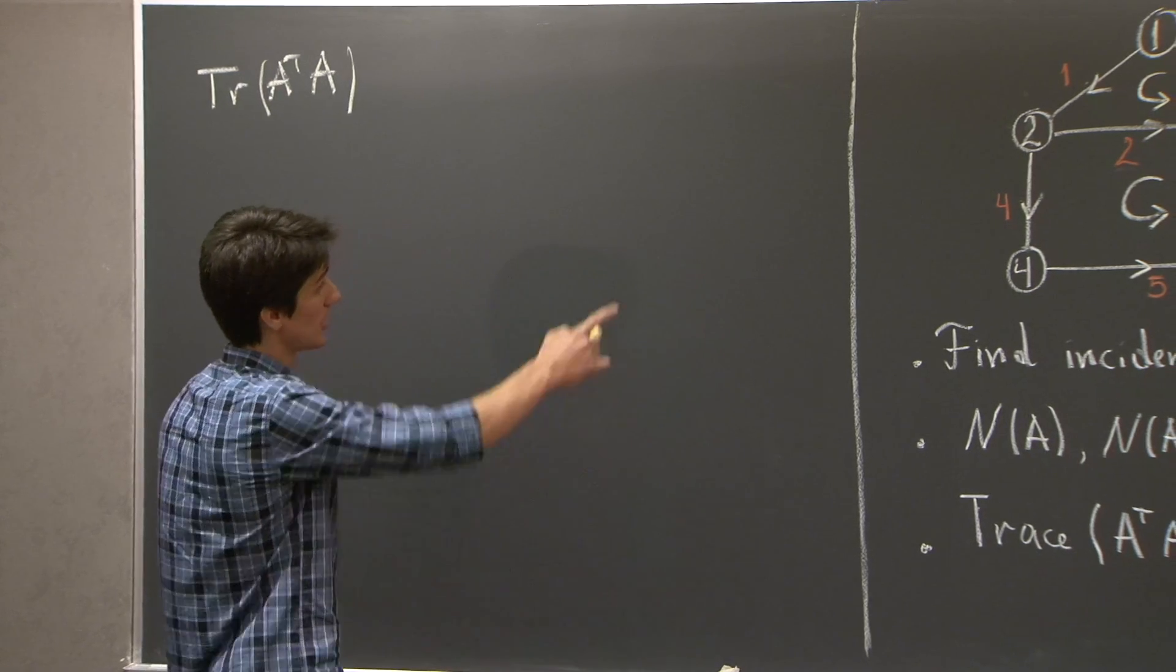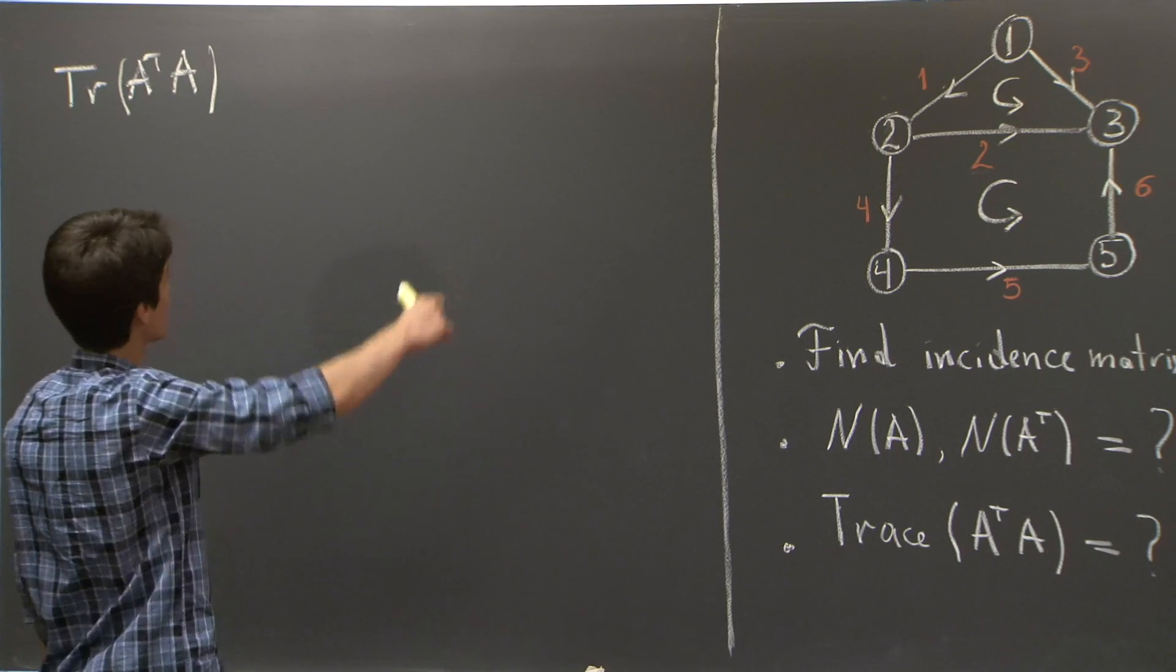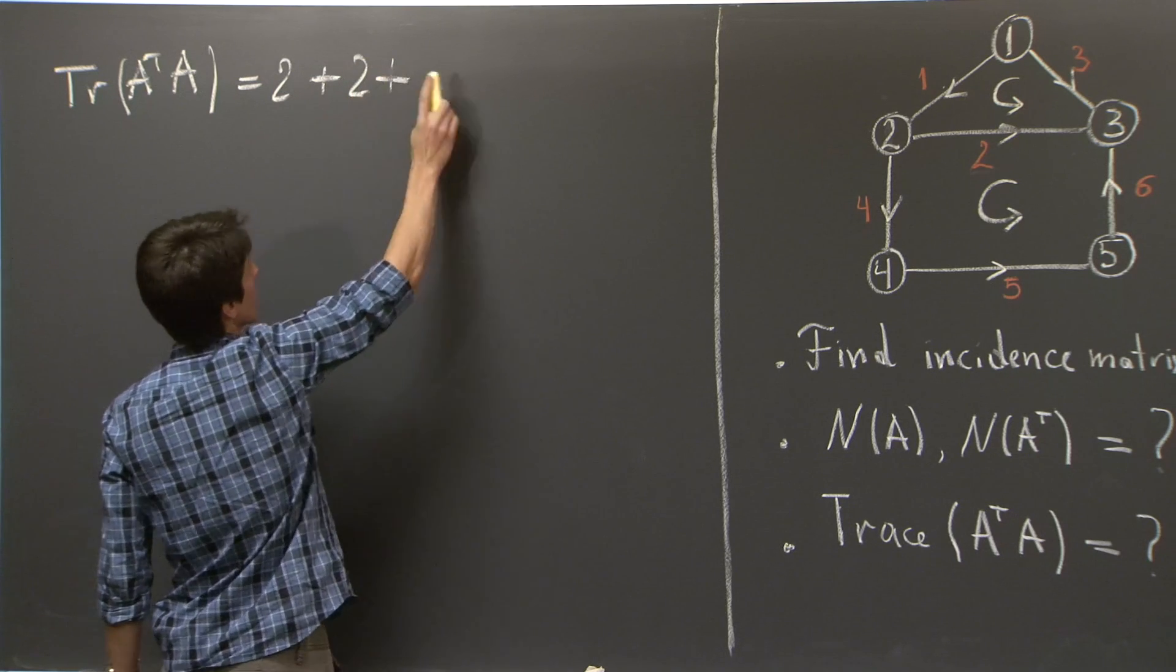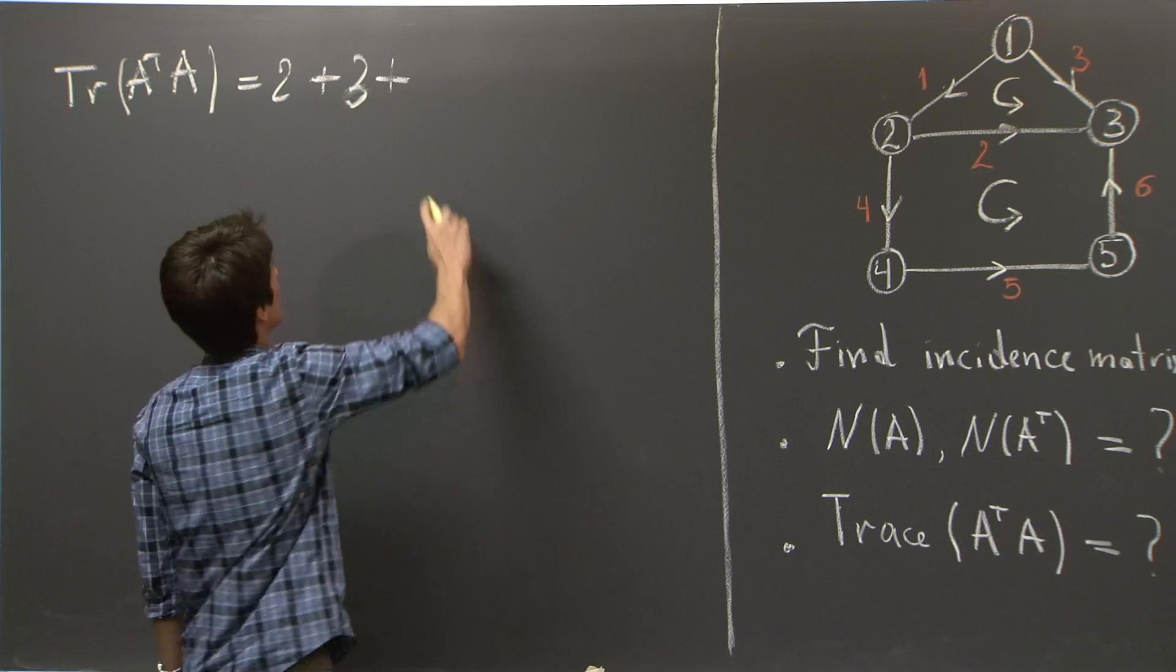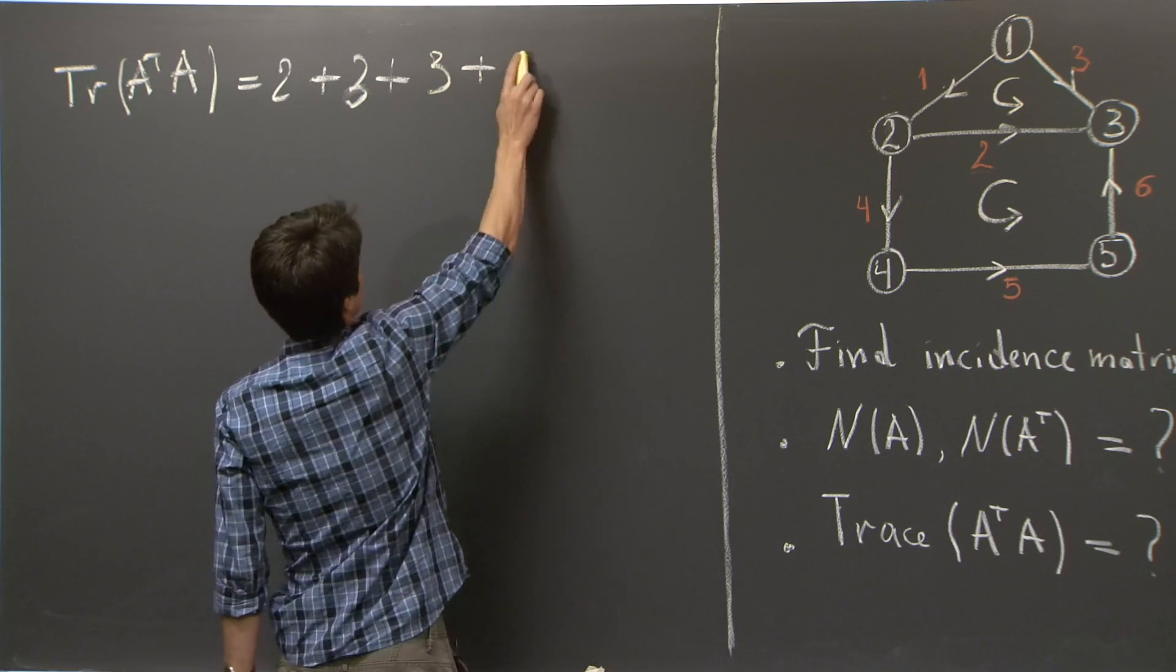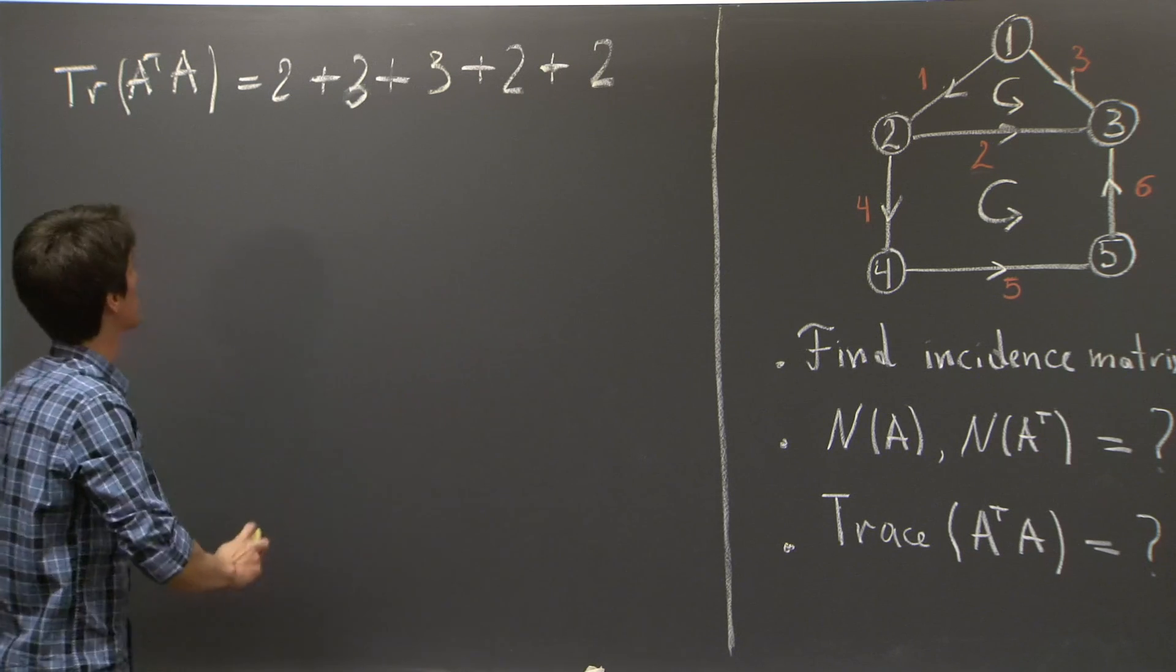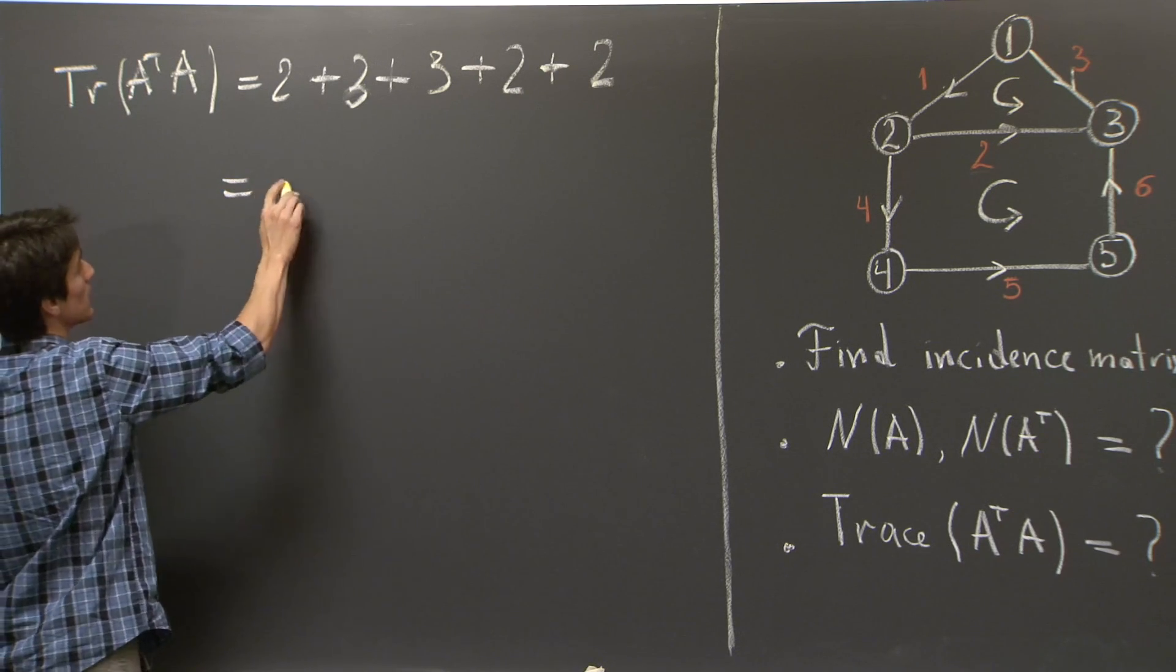trace of A transpose A will be just the sum of the degrees of the graph in the picture. So, we have 1 connects, there are 2 edges connecting to 1. So, 2 plus 3 edges connecting to 2, plus 3 edges connecting to 3. And, we get a 2 for the number of edges connecting to 4, and 2 for the number of edges connecting to 5. So, altogether, we get 12.